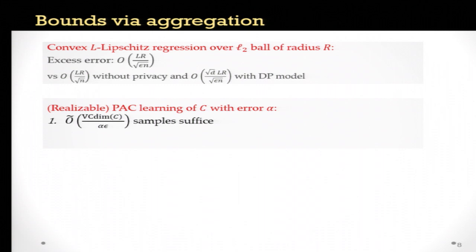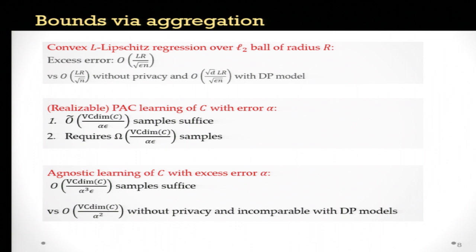We also show a lower bound that this is matched — it's the best you can do. For agnostic learning, the aggregation-based approaches do much worse; they have a pretty bad dependence on alpha and epsilon, and the guarantees they give are in some sense incomparable to what you get for learning with privacy.